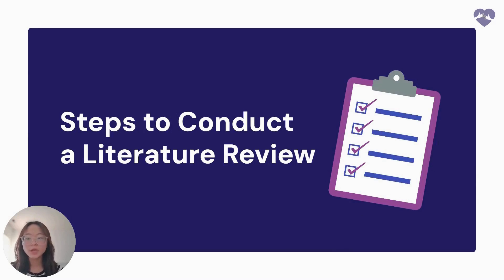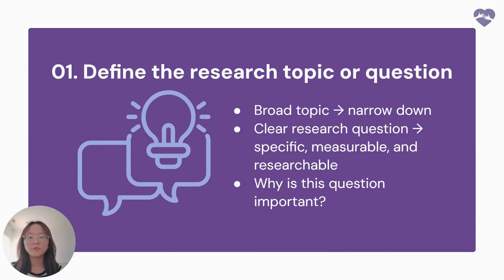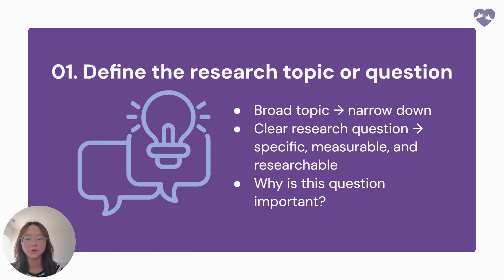Let's now talk about the five main steps in conducting a lit review. The first step is to define the research topic or question. You want to start off with a broad area of interest — think about a general subject or field you're passionate about or want to explore. For example, if you're into AI, you could start by looking at recent advancements or hot topics gaining traction within the field. Once you have a general idea, it's important to narrow it down and focus on a specific issue, population, or phenomenon. Make sure the topic isn't too broad or too narrow.